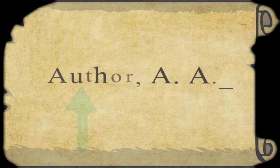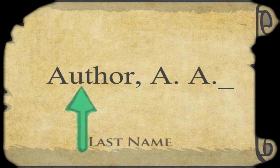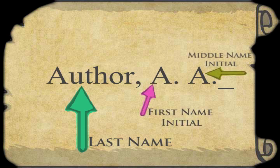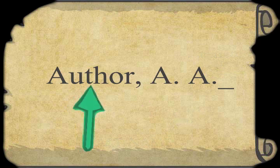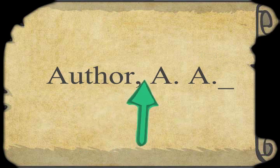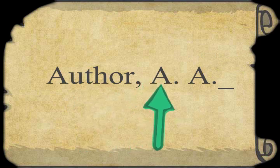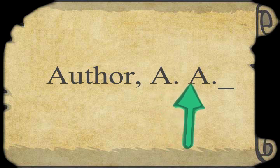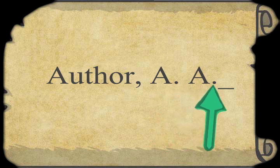The first bit is the name of the author. The last name comes first, followed by the initials of the first and middle names. Capitalize each of these, and a comma follows the last name, but a period comes after both initials. Complete the section with a space. Last name, comma, space, first initial, period, space, middle initial, period, space.